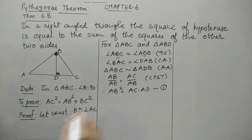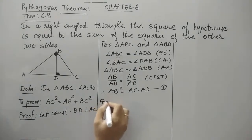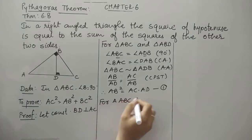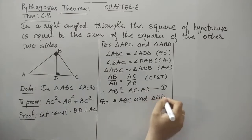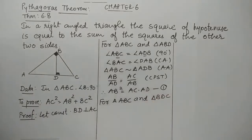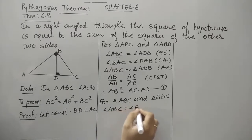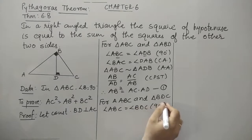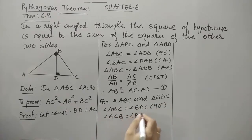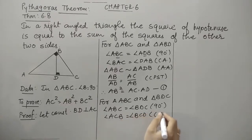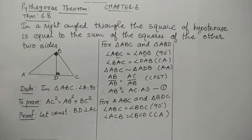Now we will obtain BC² using the same method. Let's again show the similarity for the main triangle ABC and the smaller triangle BDC. Again using the angle-angle criteria: angle ABC equals angle BDC — reason, both are right angles. And angle ACB is the same as angle BCD — reason, they are common angles. So again we can see that these two triangles are similar by the angle-angle criteria.